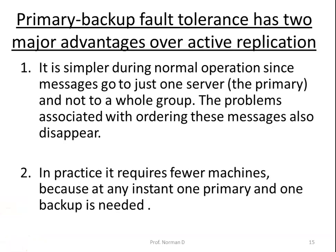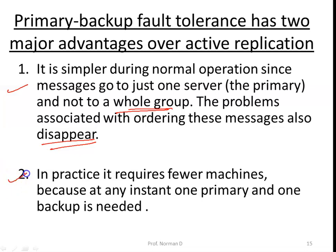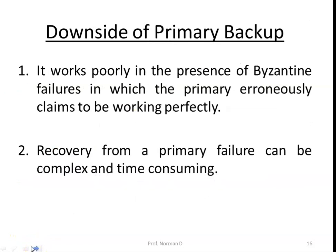Primary backup has two major advantages over active replication. First, it is simpler during normal operations since messages go to just one server, the primary, and not to a whole group of servers, which also resolves message ordering problems. Second, in practice it requires fewer machines since only one primary and one backup are needed at any instant. The downside is it works poorly with Byzantine failures, where the primary falsely claims to be working. Also, recovery from a primary failure can be complex and time consuming.